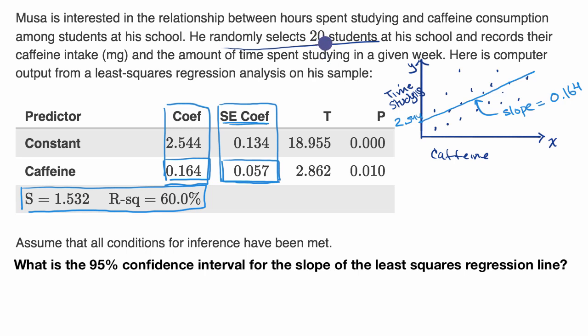You could view this as the estimate of the standard deviation of the sampling distribution of the slope of the regression line. Remember, we took a sample of 20 folks here, and we calculated a statistic which is the slope of the regression line. Every time you do a different sample, you will likely get a different slope. And this slope is an estimate of some true parameter in the population. This would sometimes also be called the standard error of the slope of the least squares regression line.